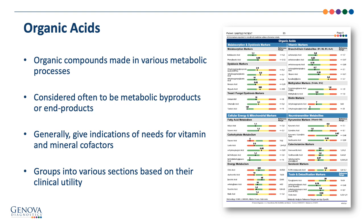From here on, we get into the actual analytes being measured on the test. These analytes serve as the data used to generate the nutrient need recommendations and functional imbalance scores. We start with the organic acids — compounds made in various metabolic processes, often considered metabolic byproducts or end products. In general, organic acids give many indications of needs for vitamin and mineral cofactors and are grouped into various sections based on their clinical utility.